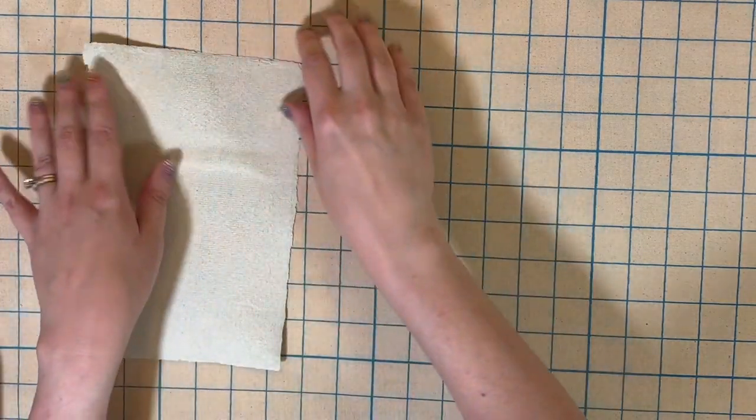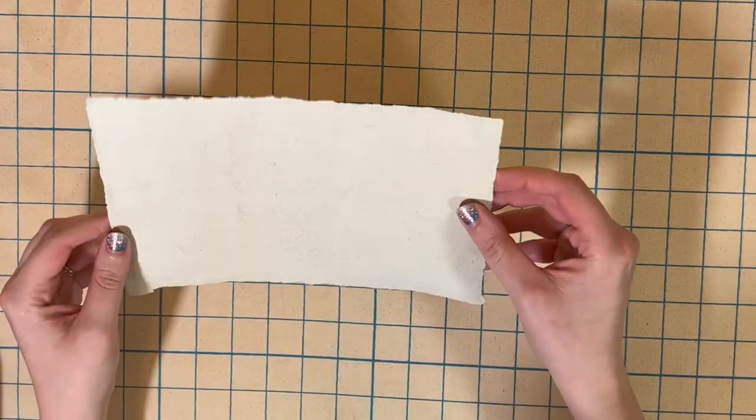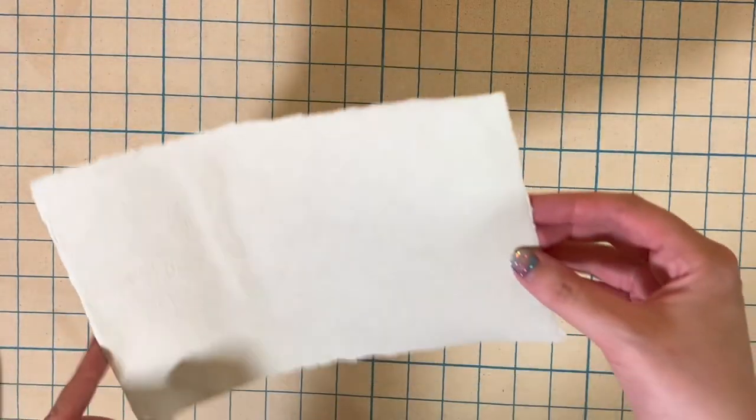All right, I think that's pretty dry. Yeah. So there we have it, my first piece of paper. It's pretty thick. I don't think I needed to use quite so much paper pulp. So that's maybe cardstock weight.